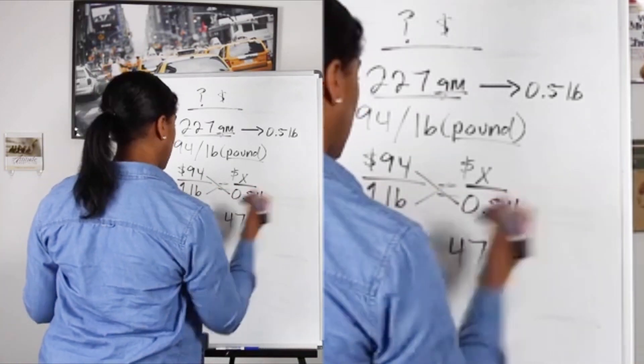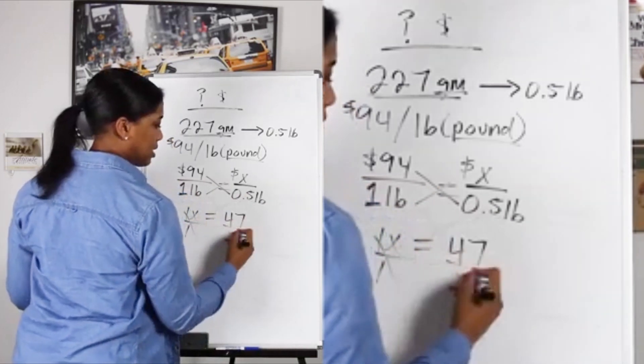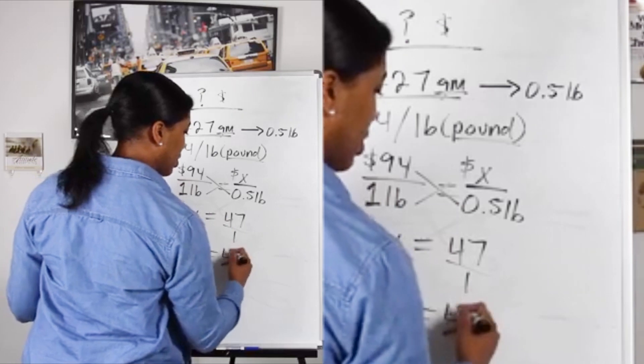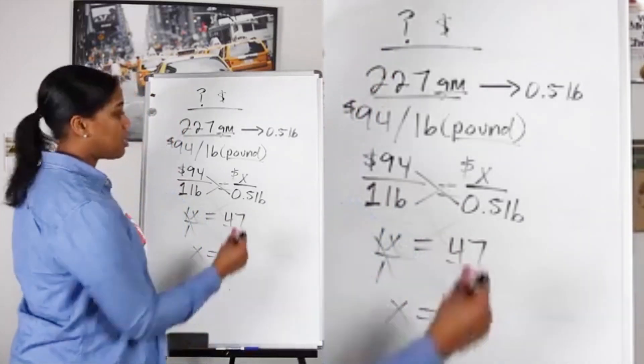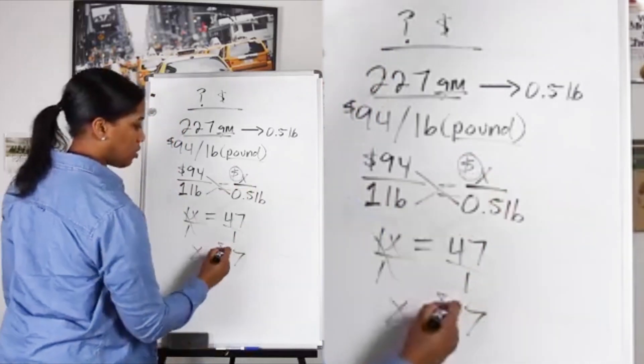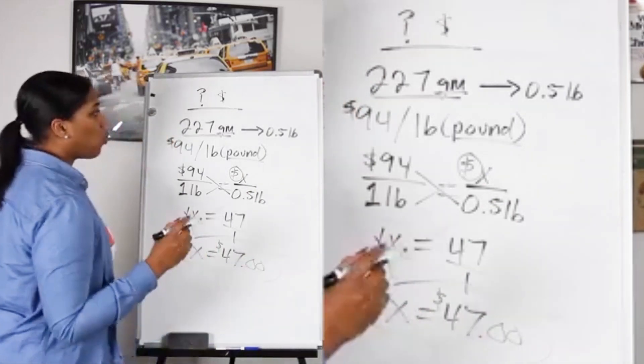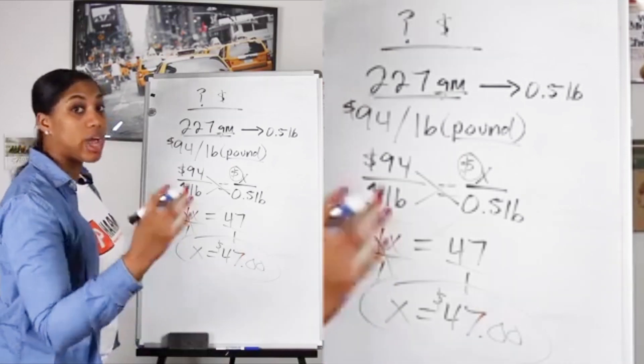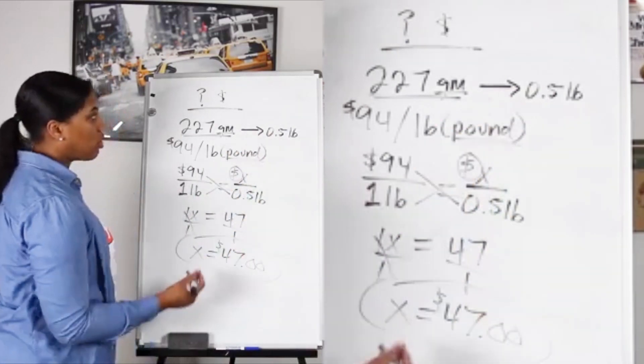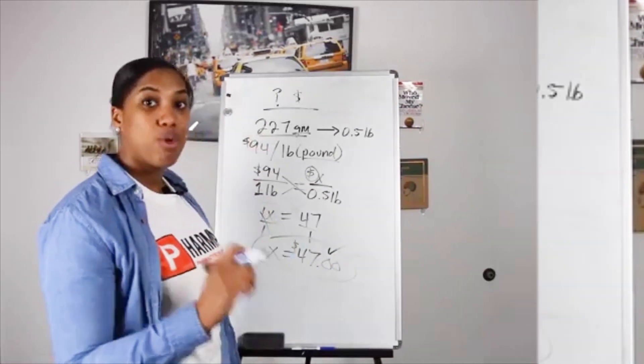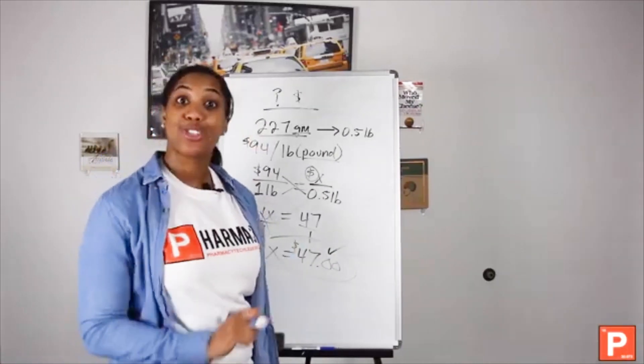47. Anything divided by 1 is that number, so x equals 47. What's the units? Dollars. So $47 is how much we would pay for 227 grams, aka half a pound, of this particular medication in the pharmacy. $47 is your answer.